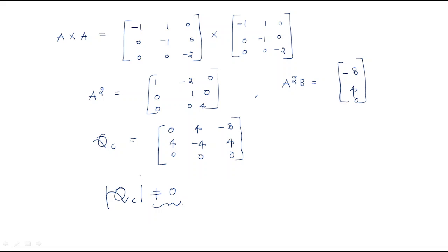The third row of QC consists entirely of zeros. Whenever a row of three zeros is present in the matrix, the determinant is automatically 0, so the system is not controllable.